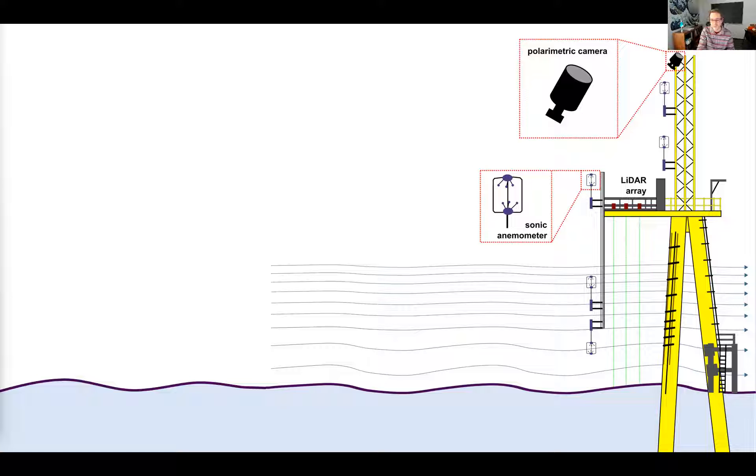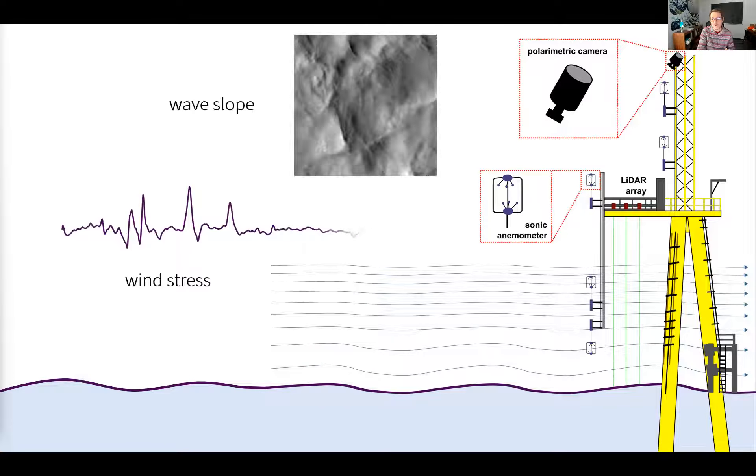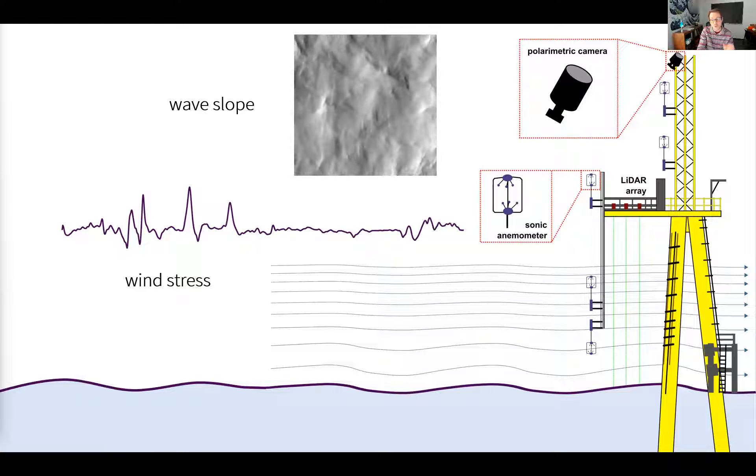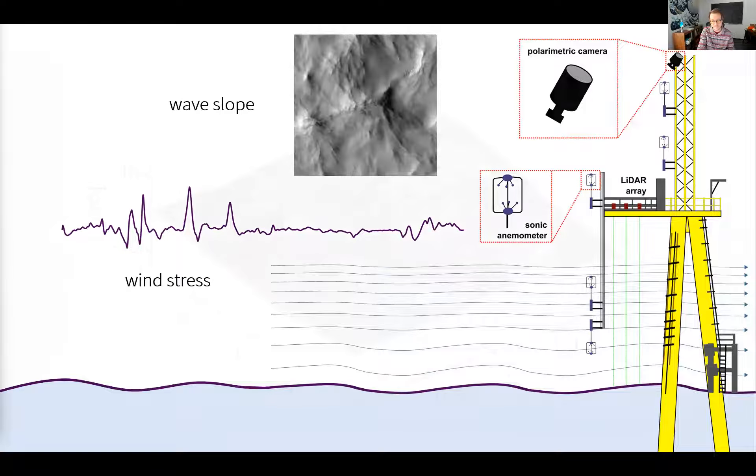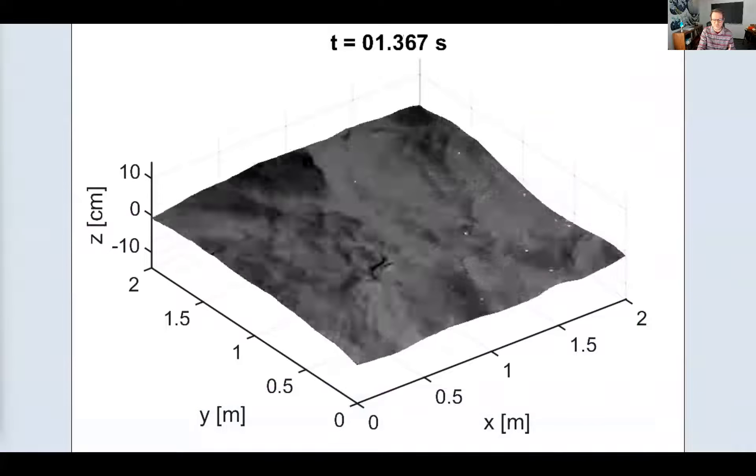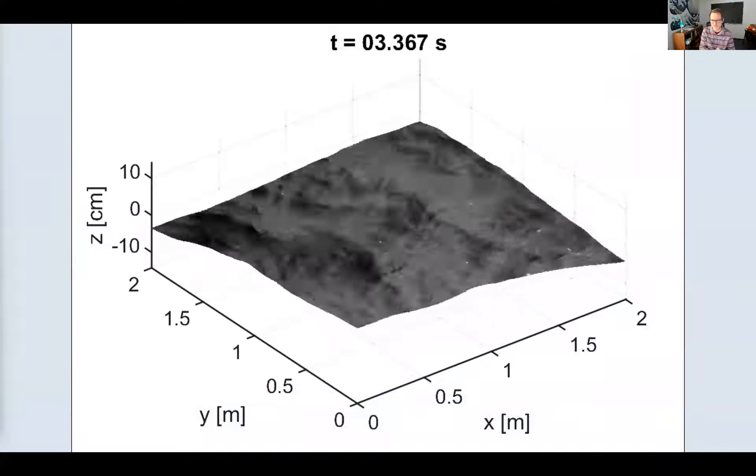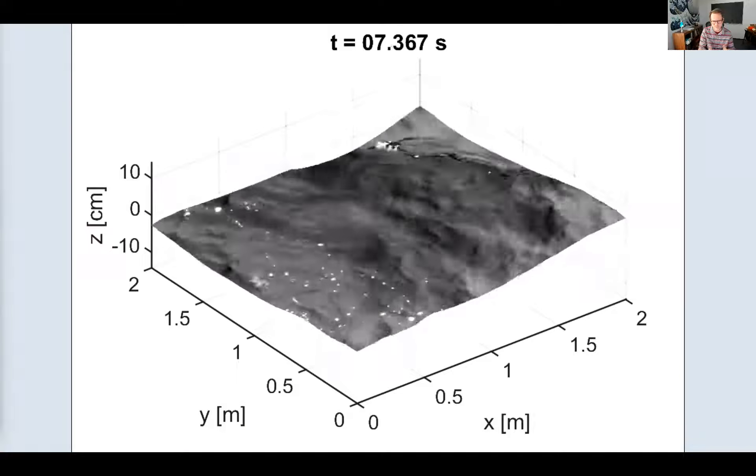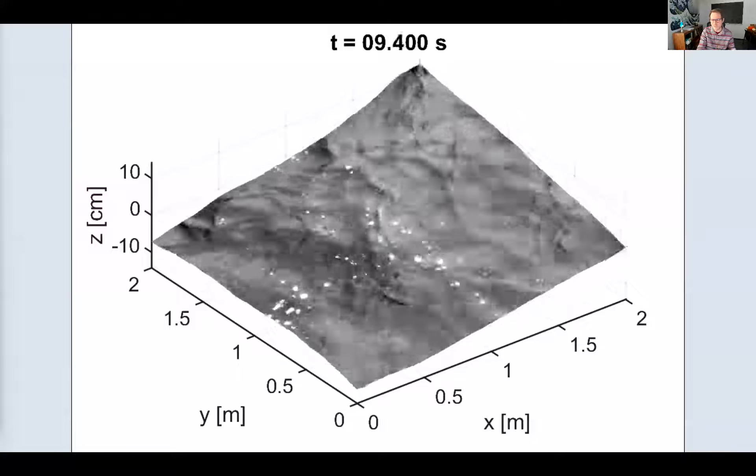We outfitted the air-sea interaction tower south of Martha's Vineyard with a number of instruments, among them a polarimetric camera. The polarimetric camera allows us to observe the spatiotemporal evolution of the sea surface topography within its optical field of view. Here's a representative example of the surface wave information we can access using this instrument. Millimeter scale resolution in length and height over a meter scale footprint.